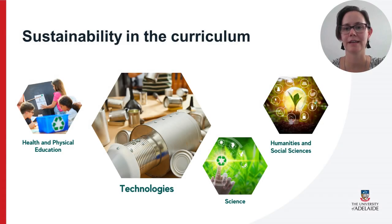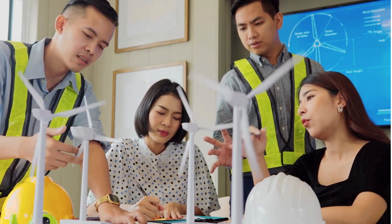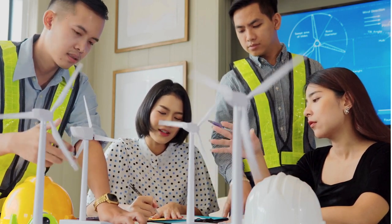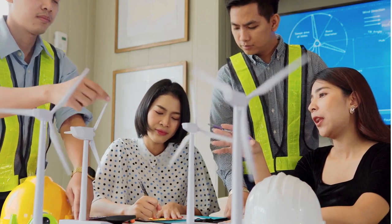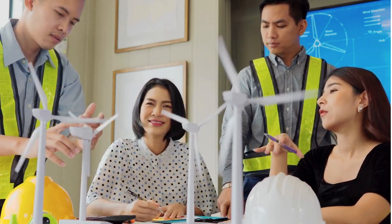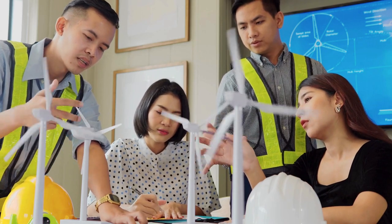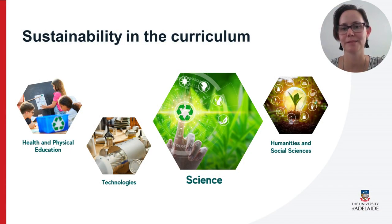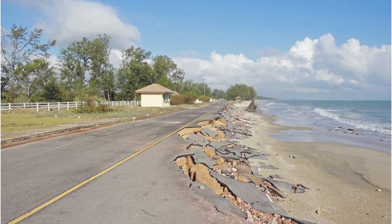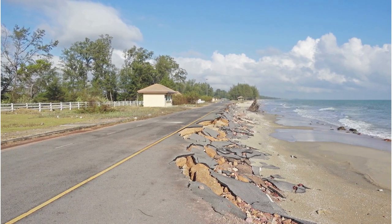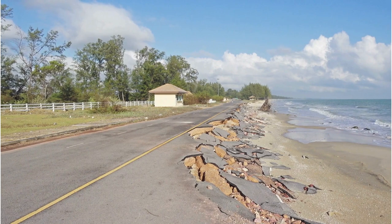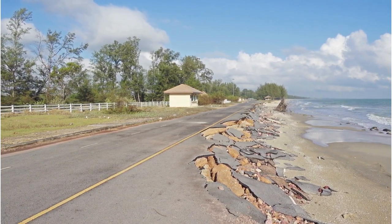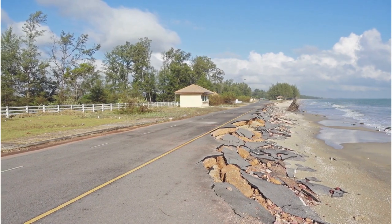In technologies, students learn how sustainability factors influence design and technology decisions. Activities involve exploring how Australian designers consider sustainability when designing products, services or environments — for example, designing products from 100% recycled materials, designing services that use minimal energy, or designing landscapes that require minimal water. In science, students learn that science plays a crucial role in making decisions that can significantly affect our environment's long-term health. The sustainability cross curriculum priority provides context for exploring aspects of our planet, such as its natural systems, how it weathers and erodes, where we get our energy from, and the broader issue of global climate change.